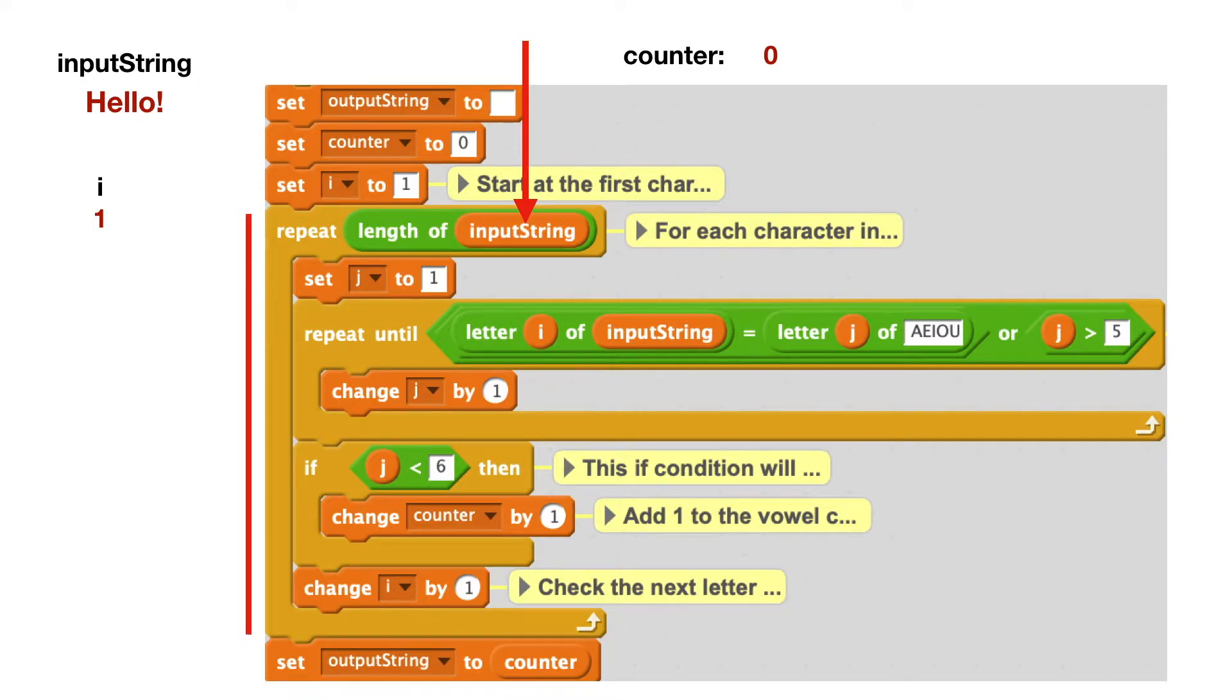Then we're going to go through this big repeat loop right here. So it's kind of a large loop. And what's happening in here? The first thing we do is we set another variable called J, and we're going to set that thing to one. And then we go through another repeat loop. So we have a loop within a loop. So right now i is one and J is one.